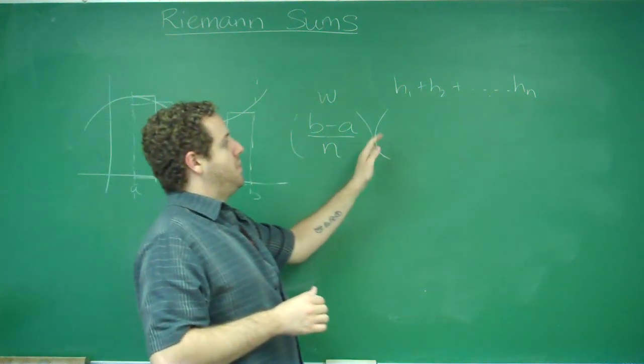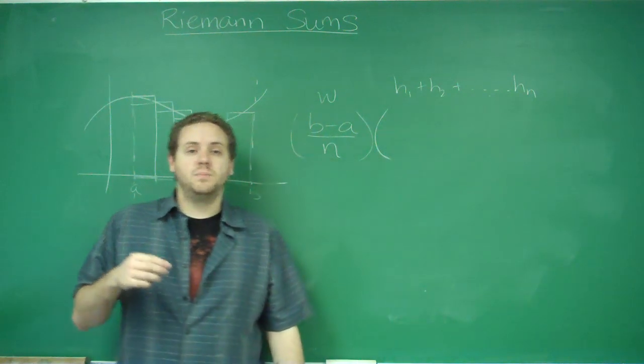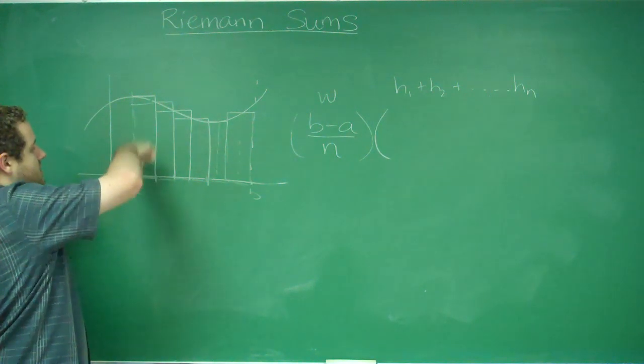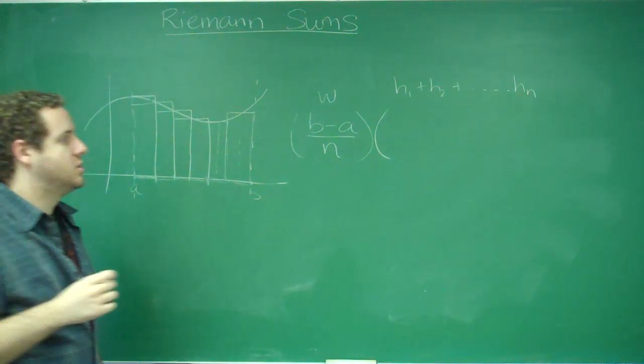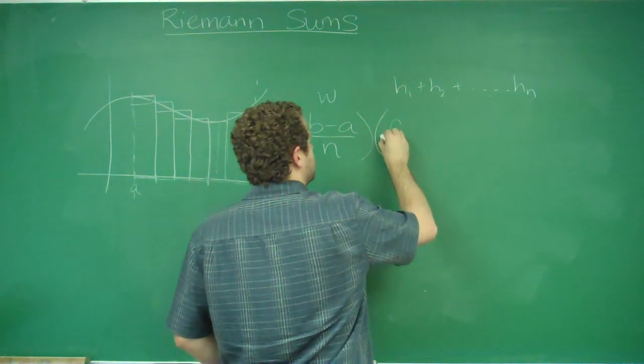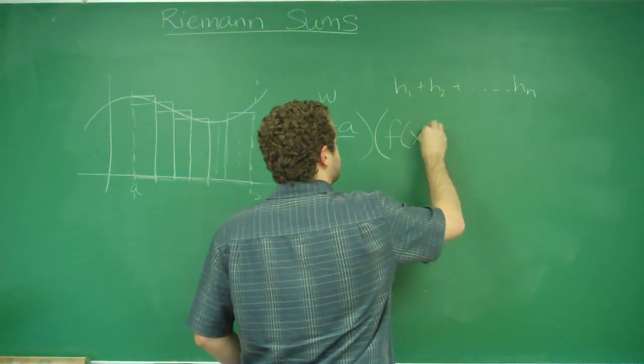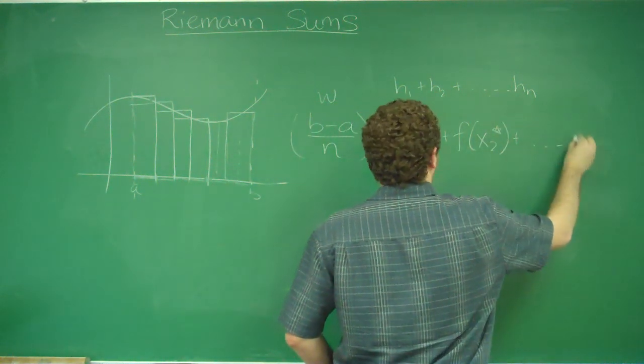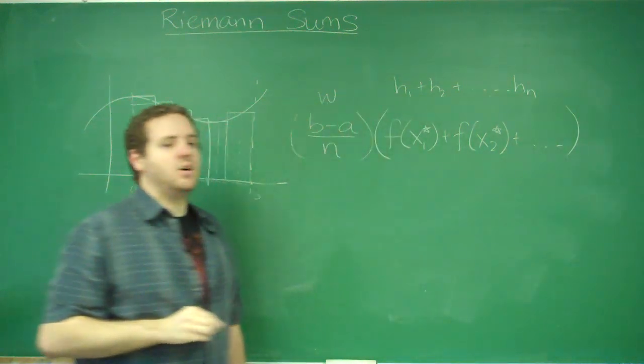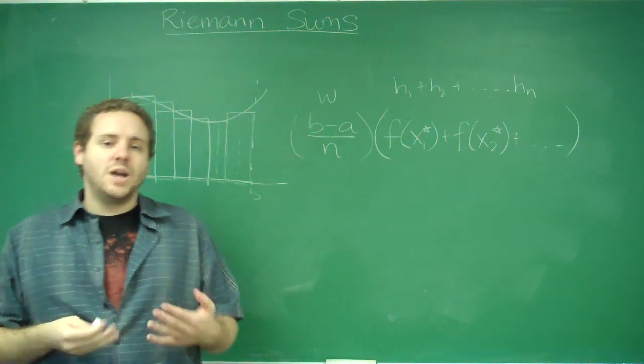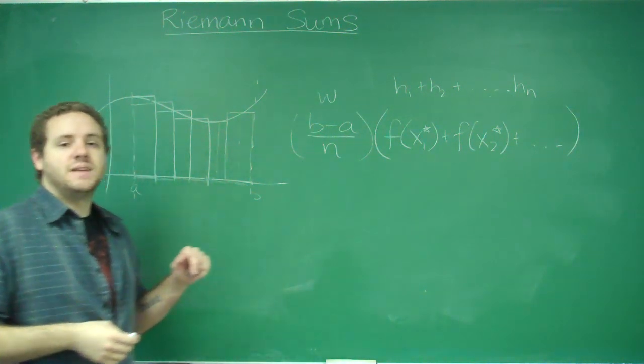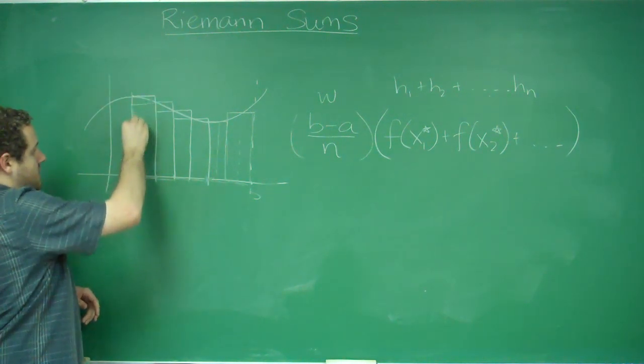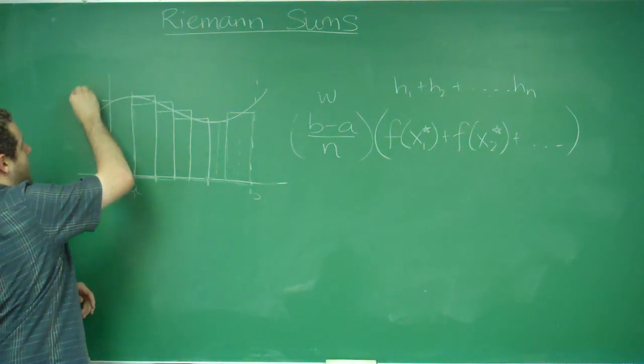So to actually calculate the areas, you need to know whether you did midpoint, left endpoint, or right endpoint. Because the height of that rectangle is completely determined by which one you use. So the way that is written usually is fx1 star plus fx2 star on and on and on. And what the star means is it's just representative of whichever one you ended up picking. So if you did left endpoint in our example here, the first rectangle, the height of it would have been this, which is f of a.